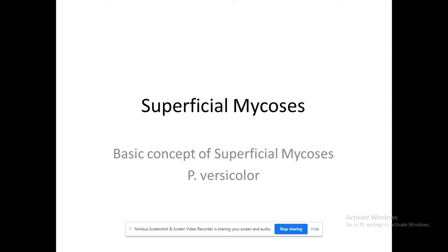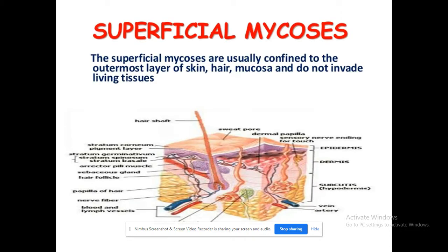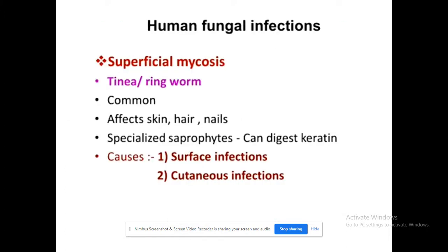Good morning students. In today's online lecture we will discuss superficial mycoses. The word mycoses refers to disease caused by pathogenic fungi. Superficial mycoses are superficial diseases caused by pathogenic fungi, usually confined to the outermost layer of the skin and mucosa. They do not invade inside living tissue. This type is commonly known as tinea or ringworm.